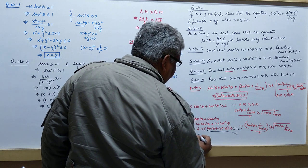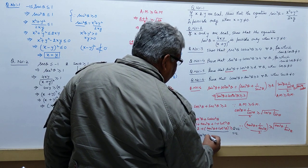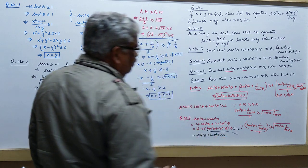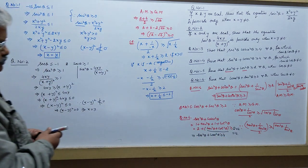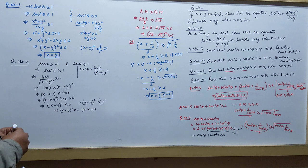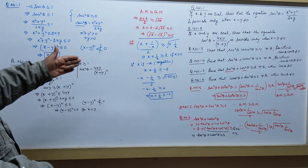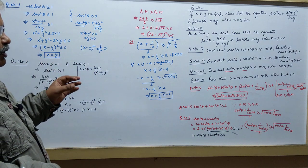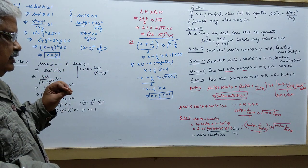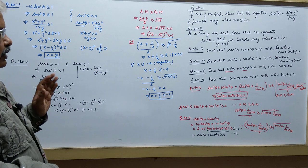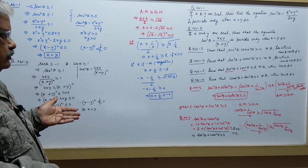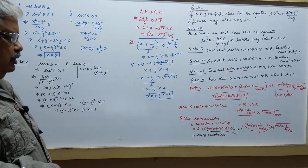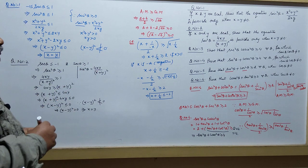So this implies secant squared theta plus cosecant squared theta is greater than or equal to 4. The argument is that arithmetic mean is greater than or equal to geometric mean. Arithmetic mean is defined as the sum divided by 2, and the geometric mean is the under root of the product.